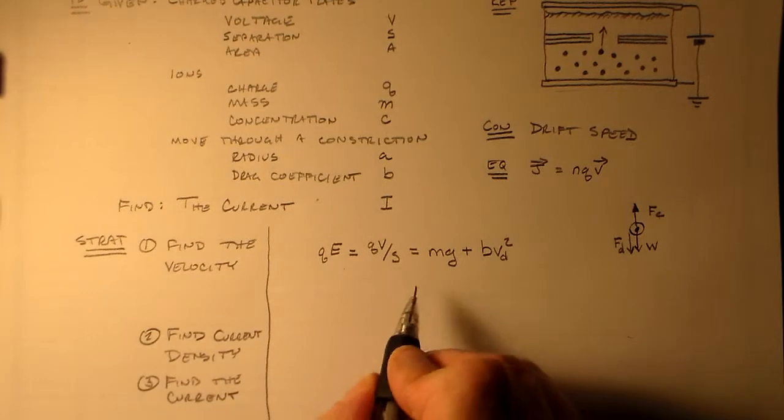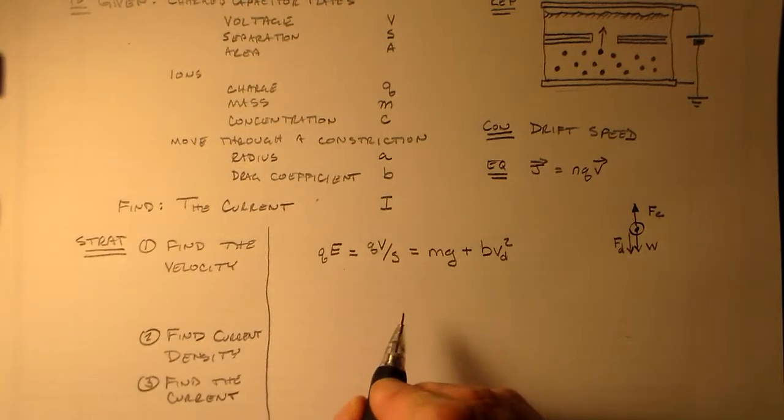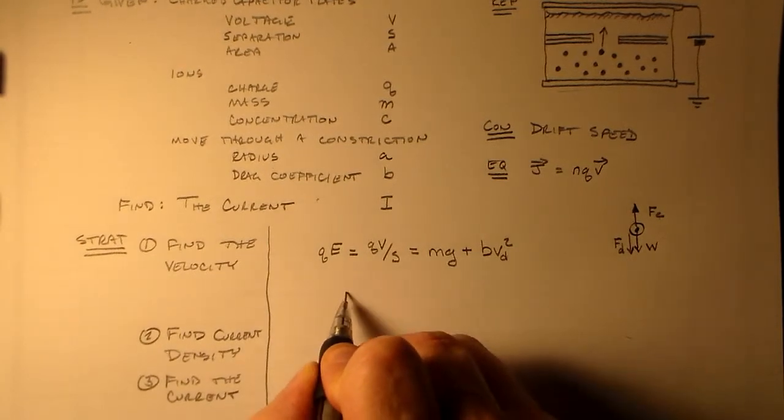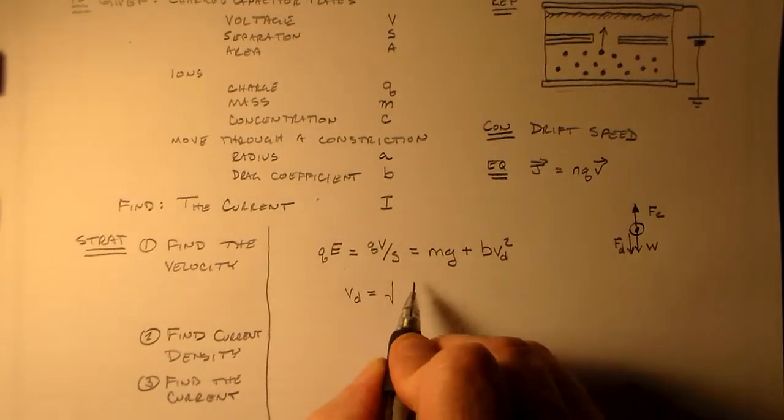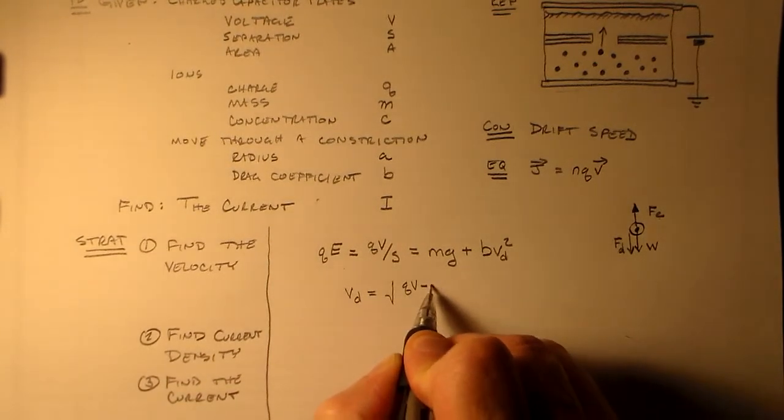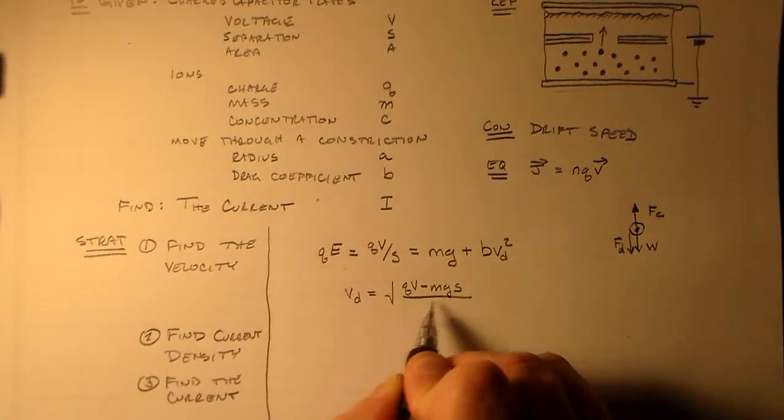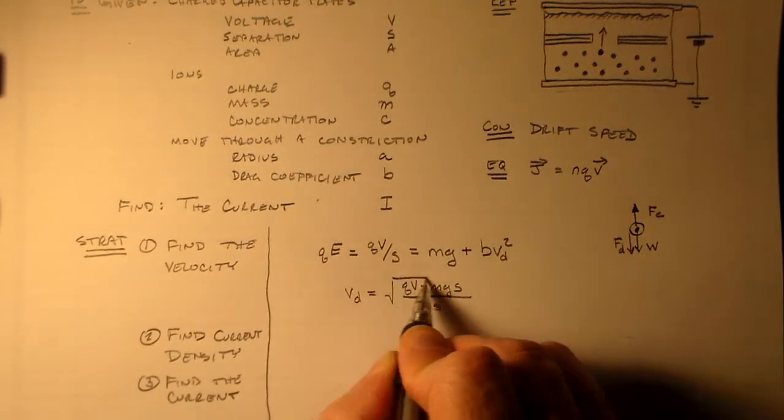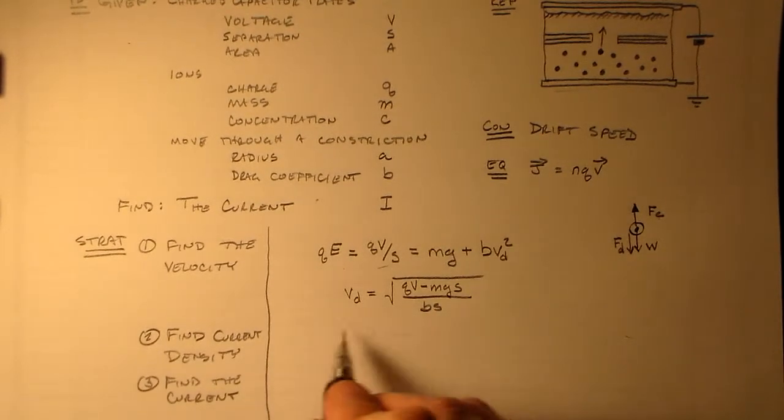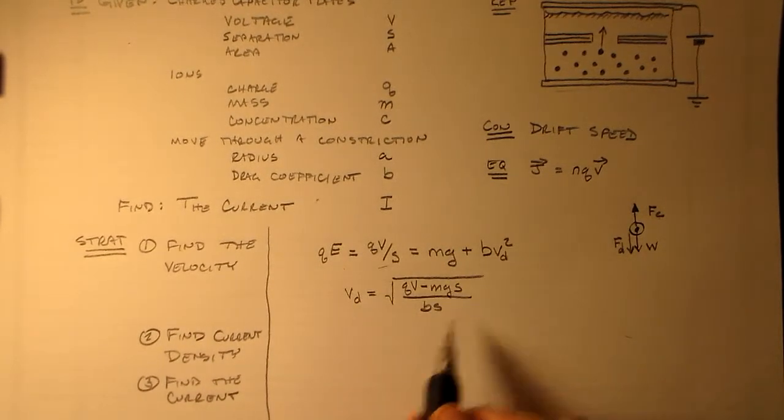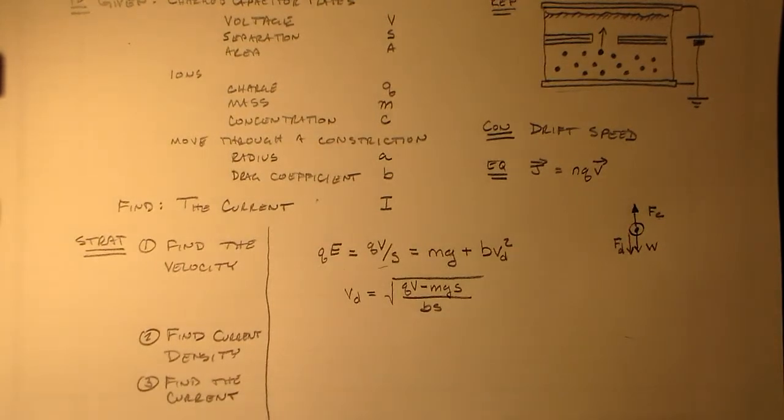So, we subtract that out and divide by B. And we have the drift speed is equal to QV minus MgS all over BS. Because we divide by B and we distribute this S with the Mg.